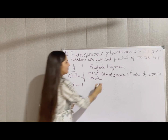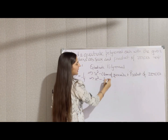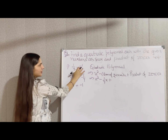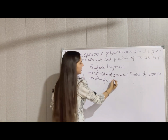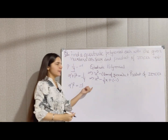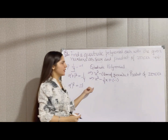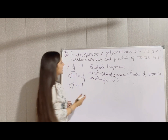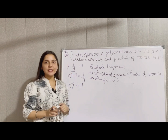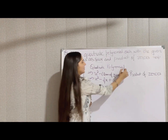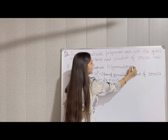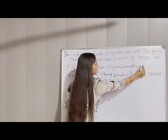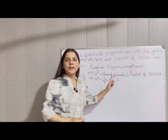The formula is: x² minus (sum of zeros) × x plus (product of zeros). So we get x² minus (1/4)x plus (-1). When we write a quadratic polynomial in standard form ax² + bx + c, it should not have a denominator.